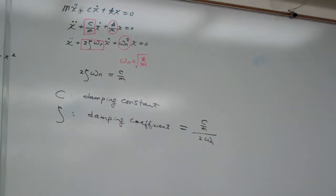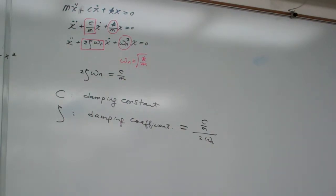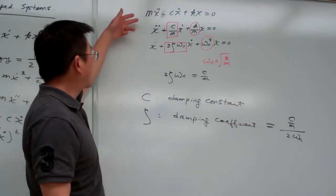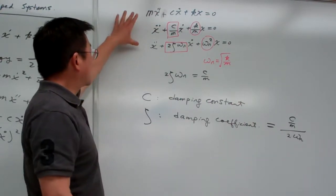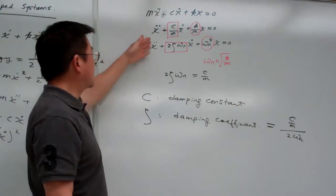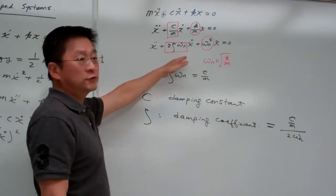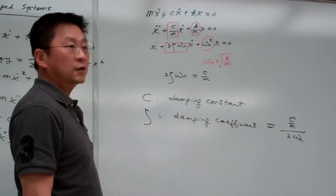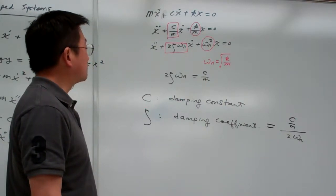The damping coefficient zeta equals (c/m) divided by 2·omega_n. The quickest way to do it: formulate those standard templates, then compare term by term the coefficient of each term and you will get this result.